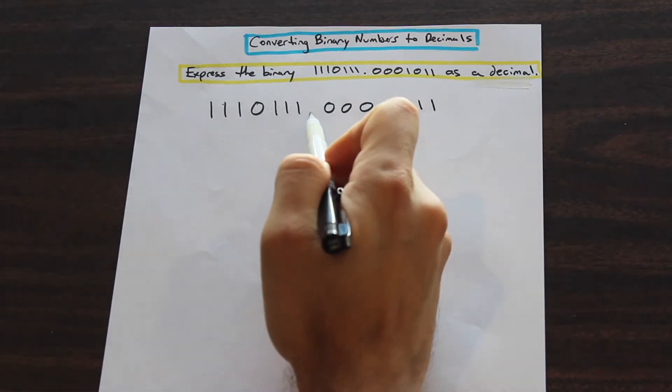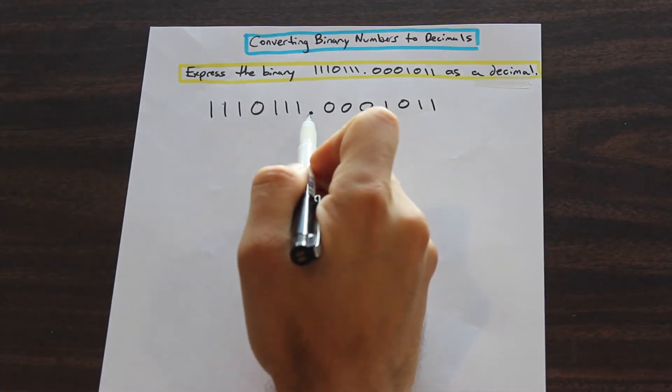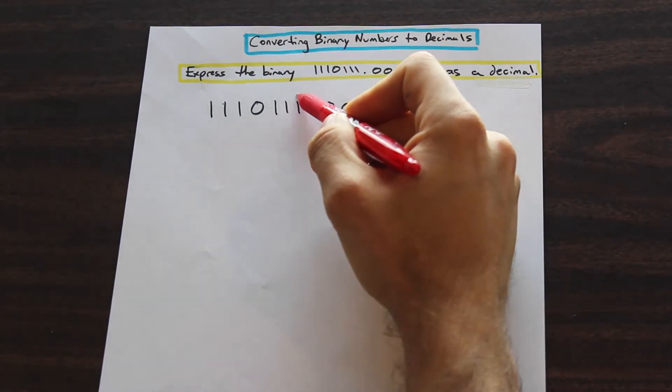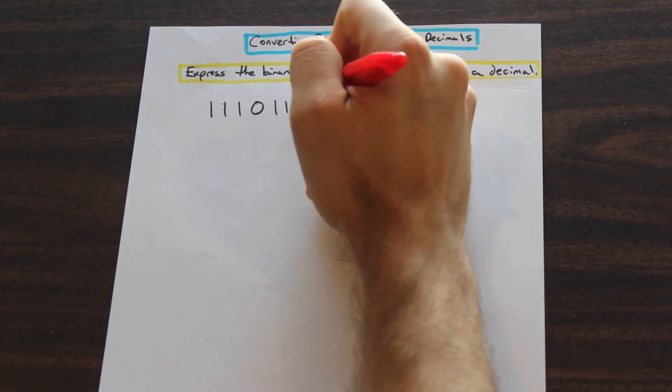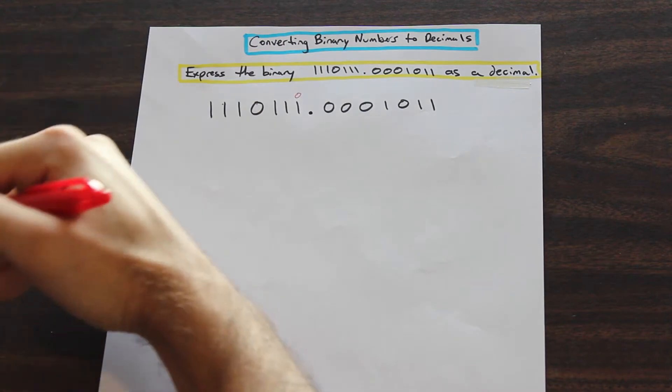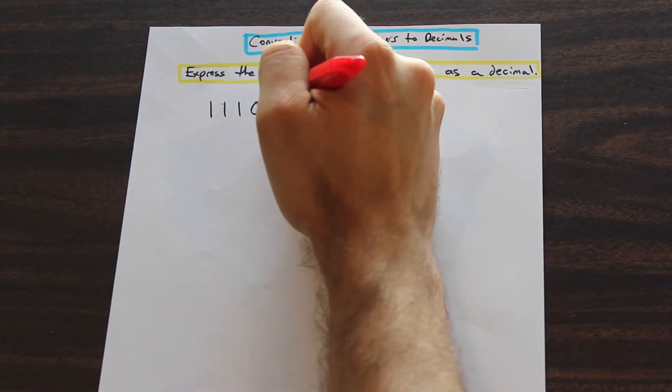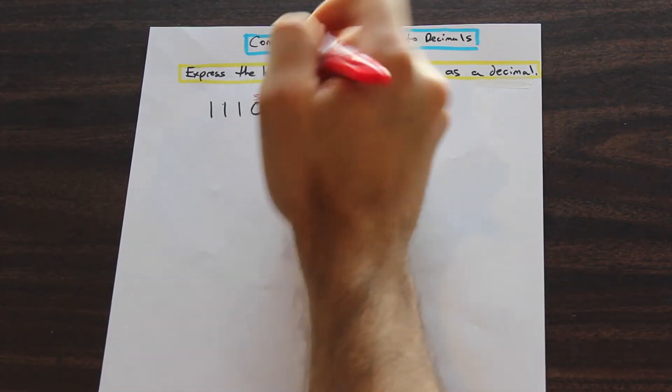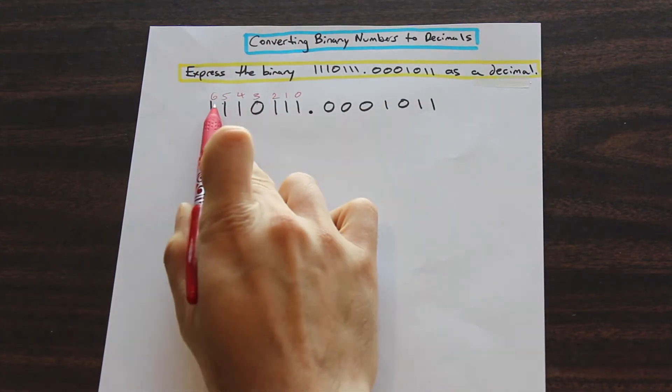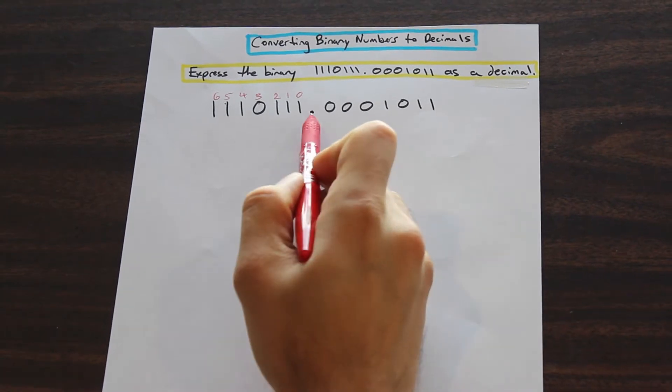We're going to start, we're going to look for the decimal place here and we're just going to go one number to the left of that. What I'm going to do is write on top of the numbers in a different color. Just to the left of the decimal I'm going to write a 0 and from this number onwards this way I'm just going to write sequentially ordered numbers.